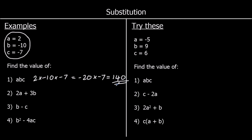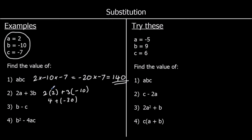Question 2: 2a plus 3b. So 2 times a — 2 times 2 is 4 — plus 3 times b — 3 times negative 10 is negative 30. So it's 4 plus negative 30. That's the same as saying 4 take away 30, so that's negative 26.